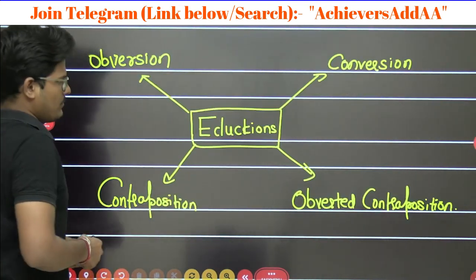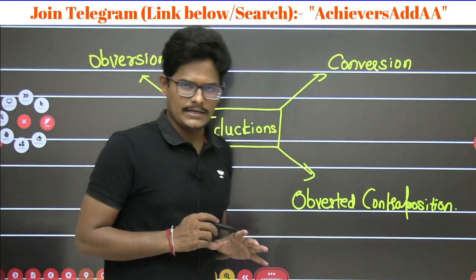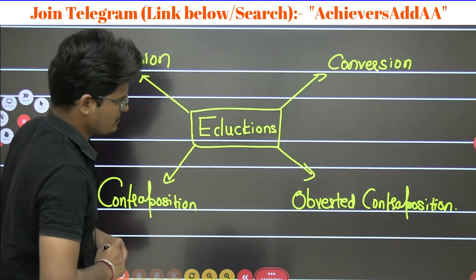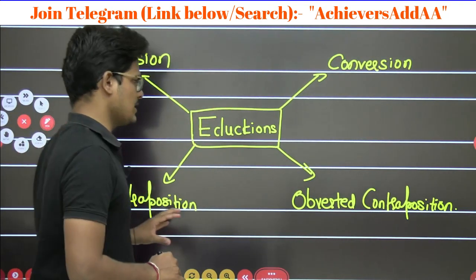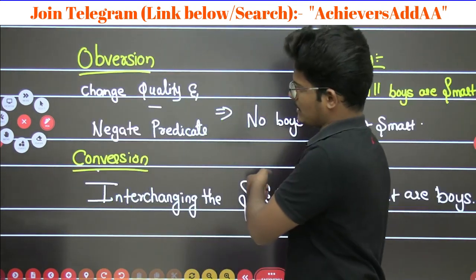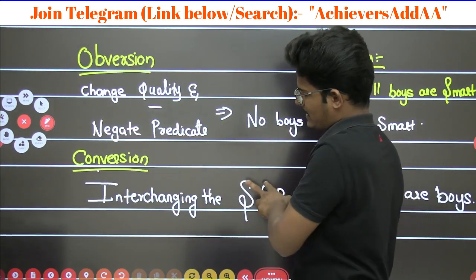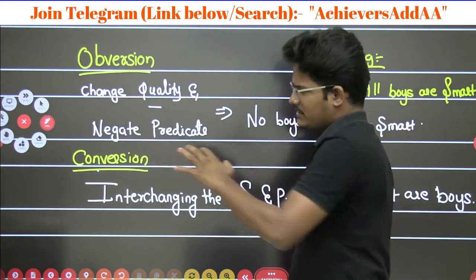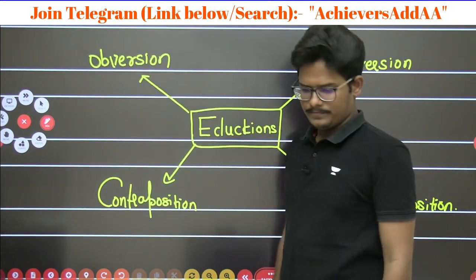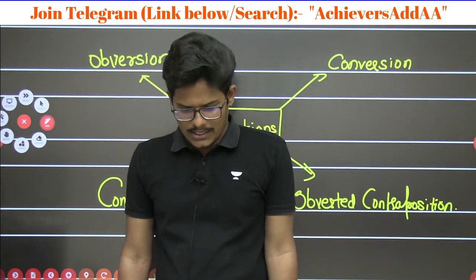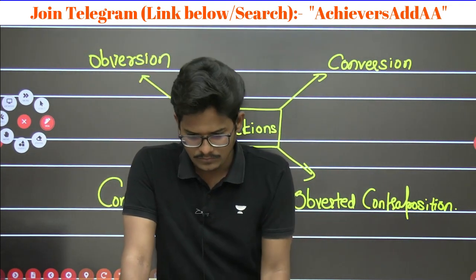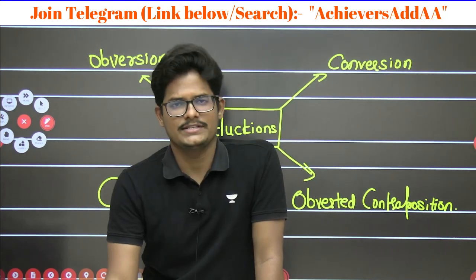So the deductions, which are part of immediate inference — after the square of opposition, deductions will be the most important topic to be asked. Obversion, conversion, contraposition, averted contraposition in the simplest way. Remember the rules — it will confuse you: quality and negating the predicate almost appears in every part of the process. I hope you understood and are very clear. This is about the deductions.